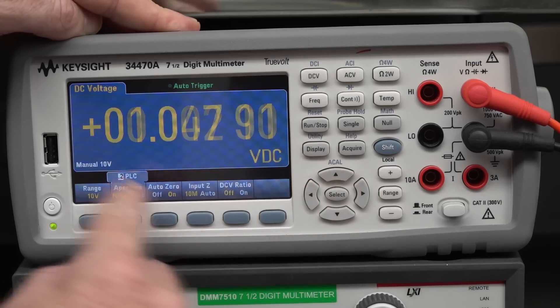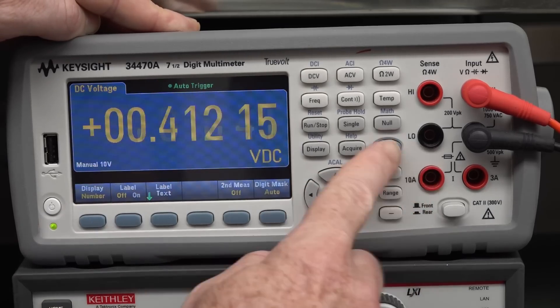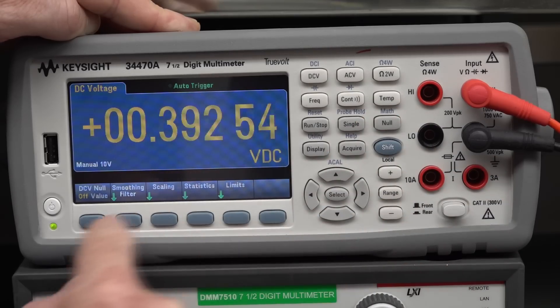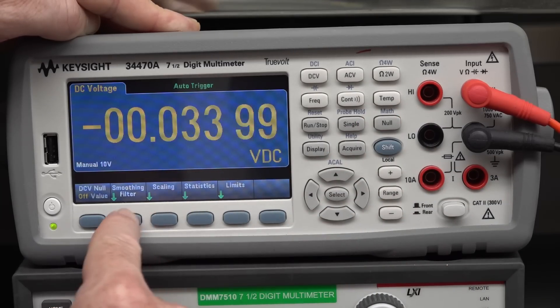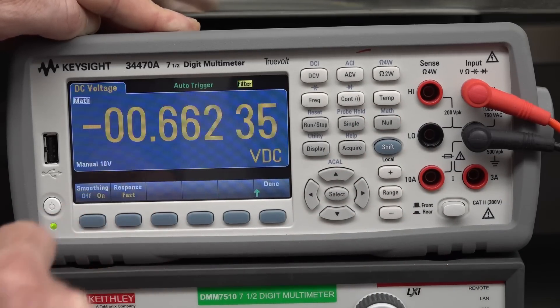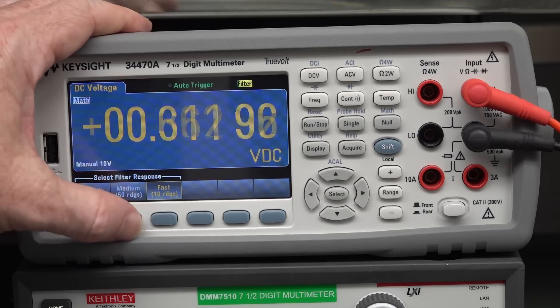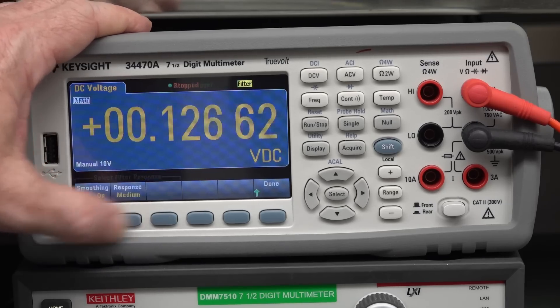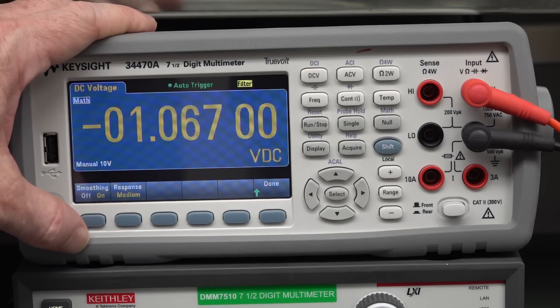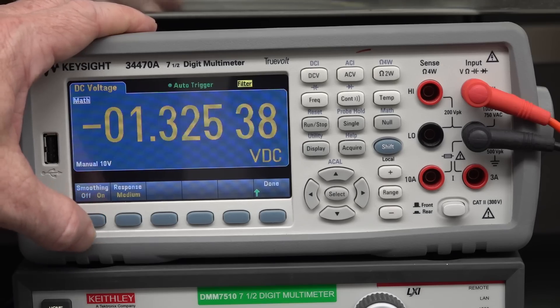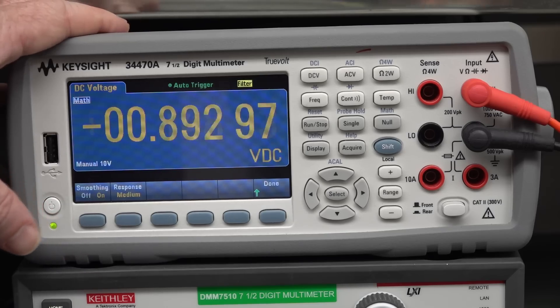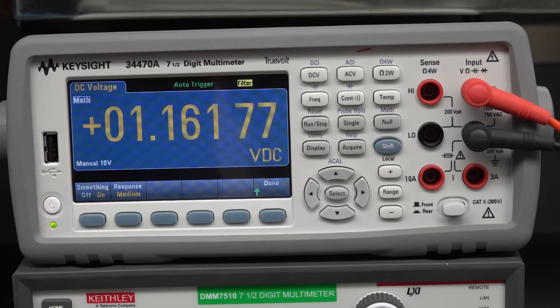And I can show you how the smoothing or average mathematical averaging doesn't do the same thing. It's actually to do with the measurement integration. Not the post-measurement smoothing or something like that. So, let's go down to 0.2 power line cycles here. And then we'll go into math up here. And, where are we? We've got smoothing filter. There we go. If we turn the smoothing filter on, it doesn't really do anything. So, it's doing, and the response also, 10 readings, 50 readings of smoothing. It doesn't help. So, doing post-sample averaging and smoothing does not help the situation.